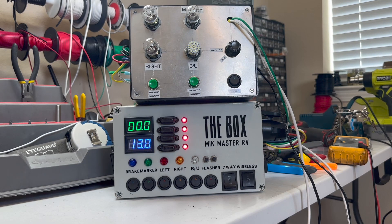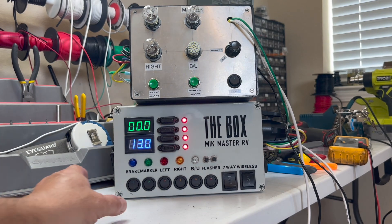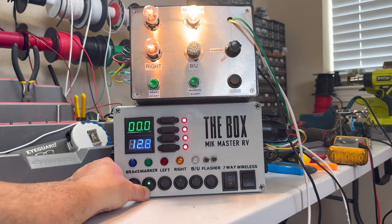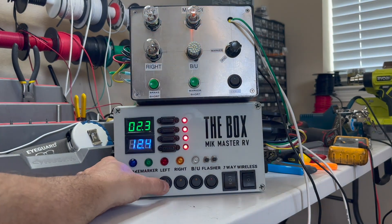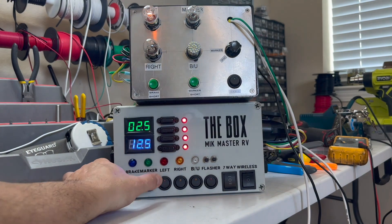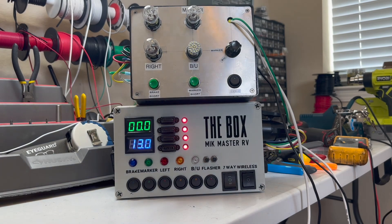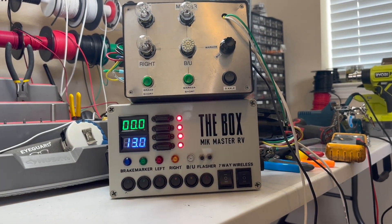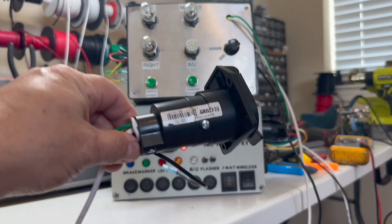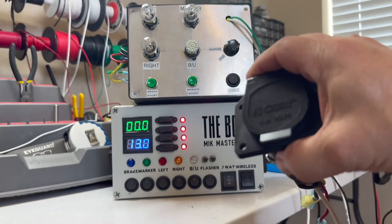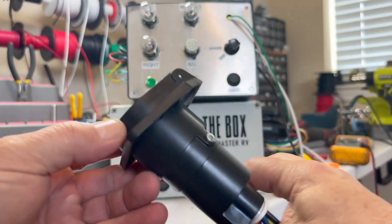So if you don't want to make a fancy trailer tester like this one, there's a cheap, easy way to do it. You could just put together a plug with wires on it.